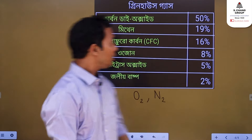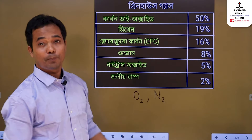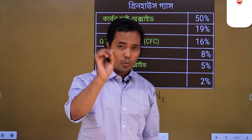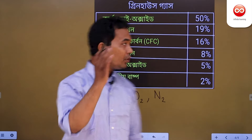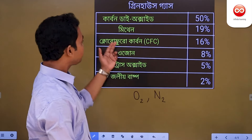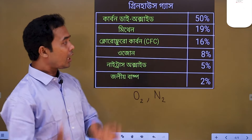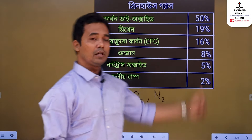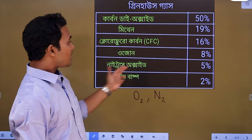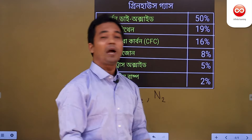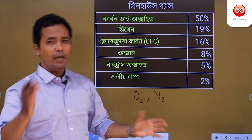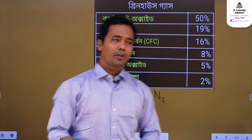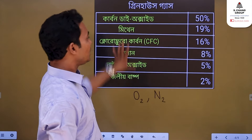CH4, methane, is 19%. The chlorofluorocarbon is 16%. Ozone gas is 8%. Nitrous oxide N2O is 5%, and the water vapor is 2%. The greenhouse gas composition is as follows.